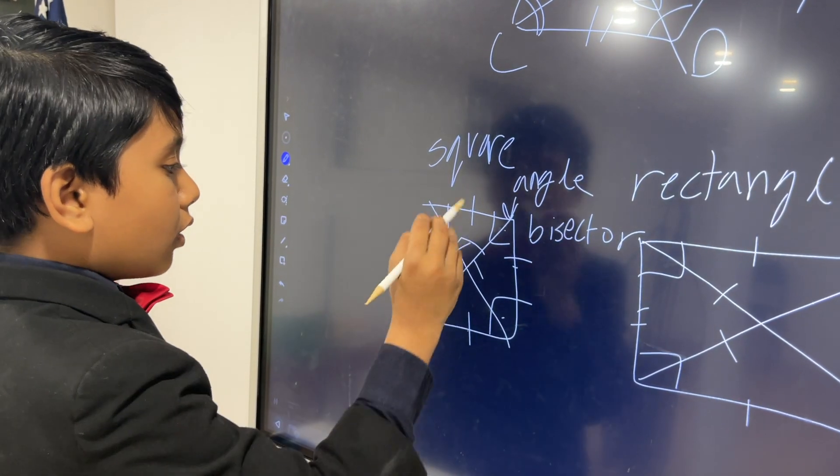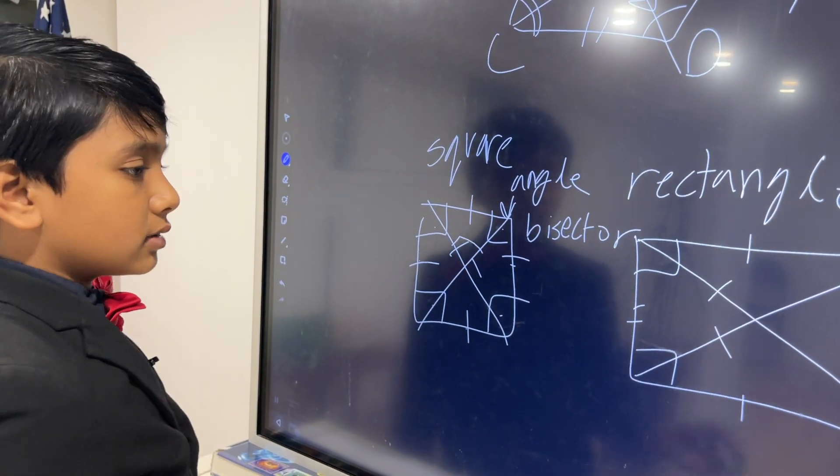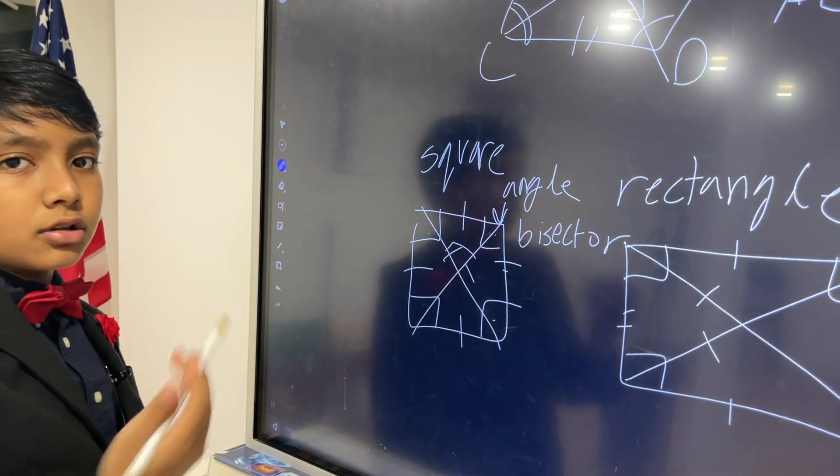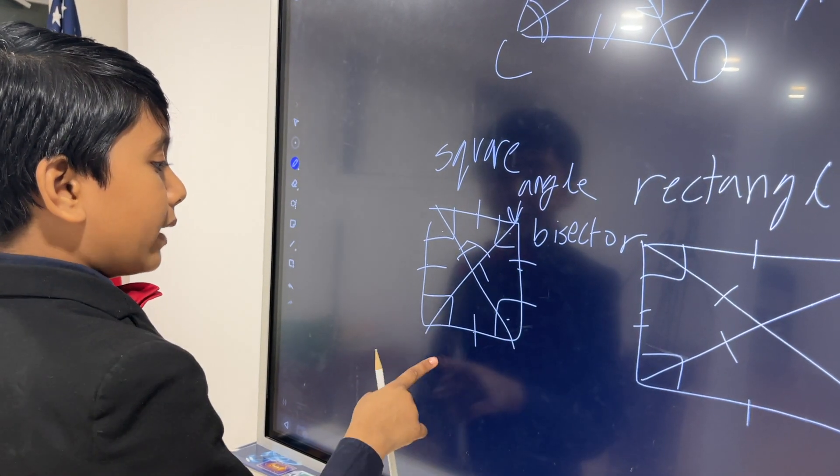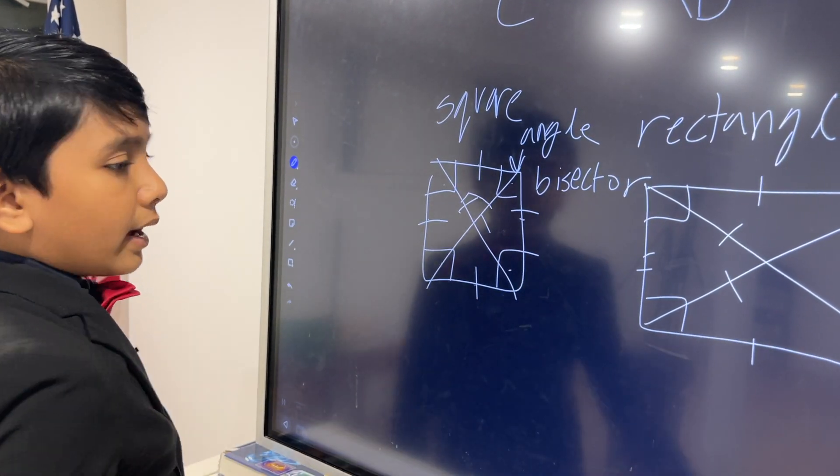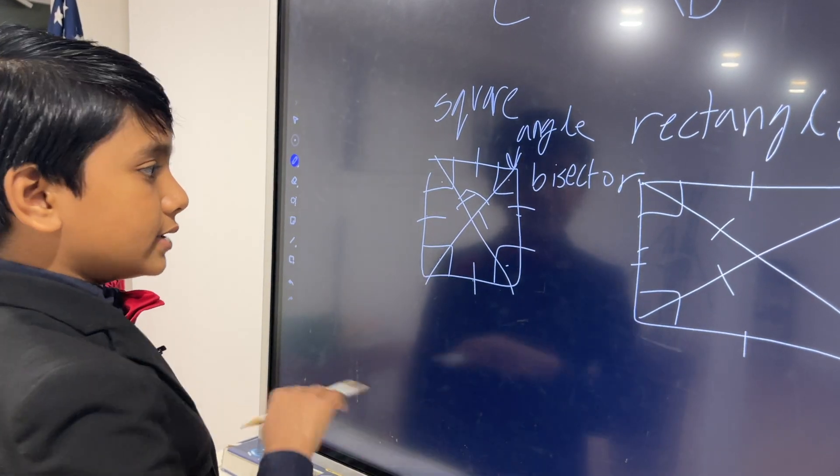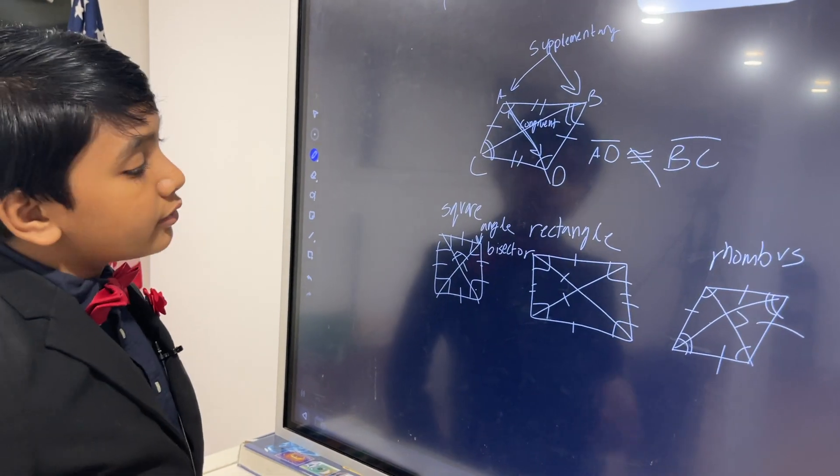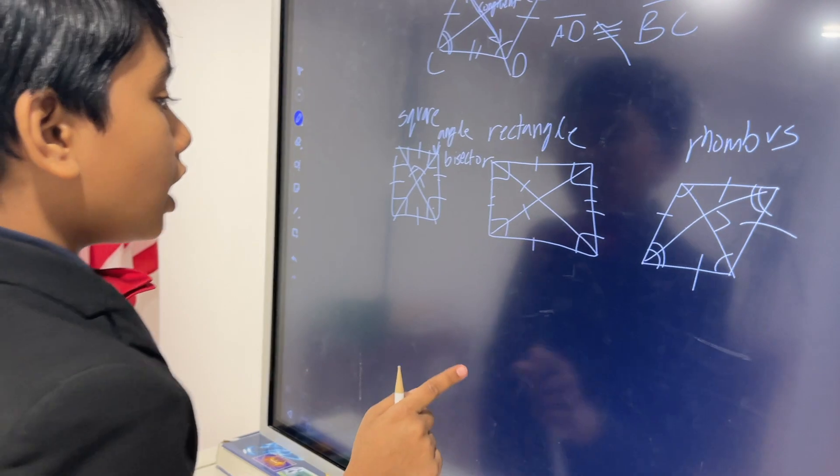There are congruent diagonals, like the rectangle. There are perpendicular diagonals, like the rhombus. There are angle bisector diagonals, which is also an attribute of the rhombus.